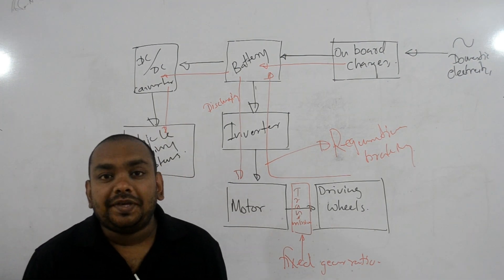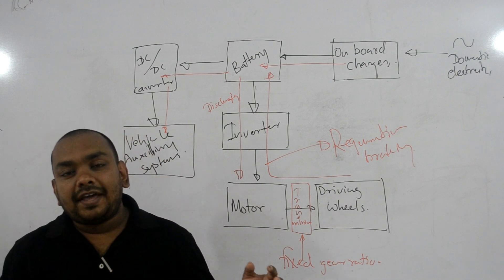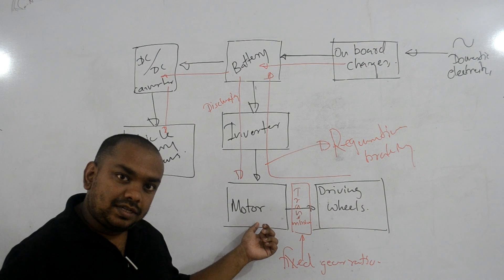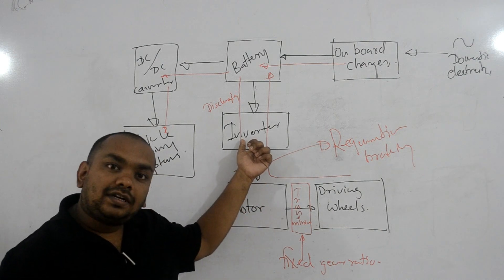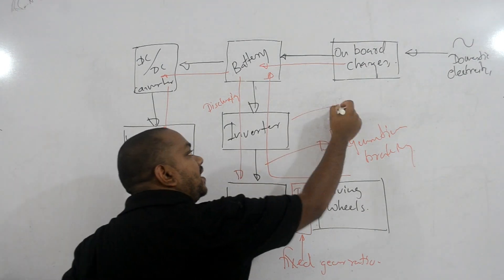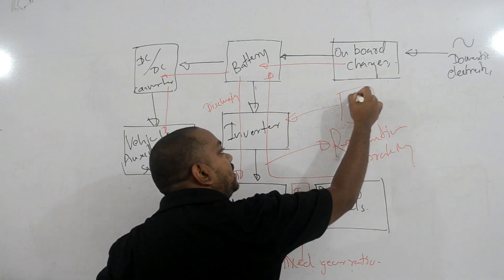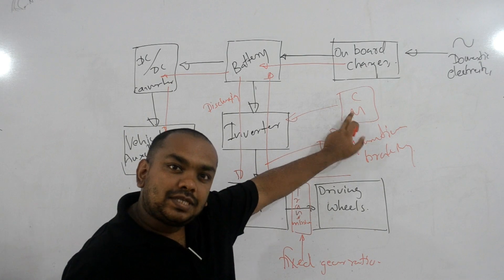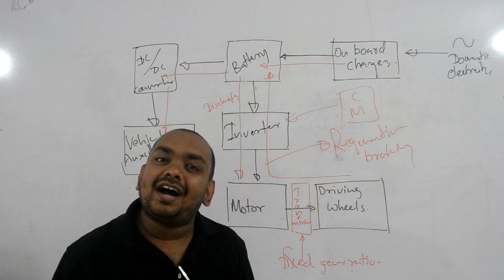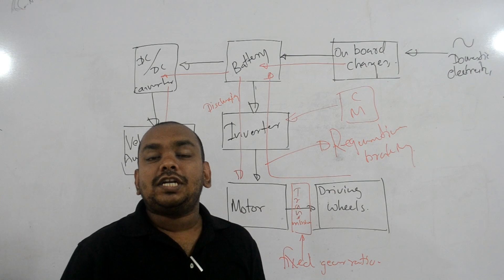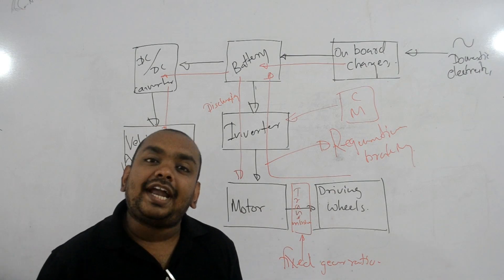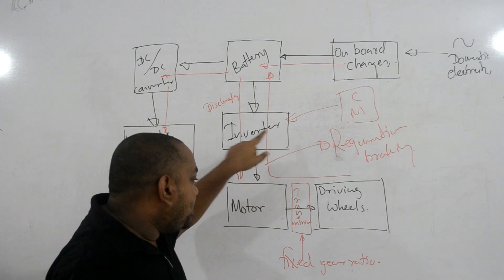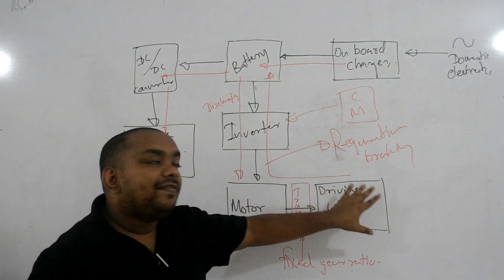The whole driving process is controlled by the motor, and the motor is controlled by the inverter. To control the inverter, we have a separate controlling module. This controlling module receives all the driver's demands and the working condition of the vehicle. According to that, the controlling module controls the inverter, which in turn controls the motor and the vehicle moves.